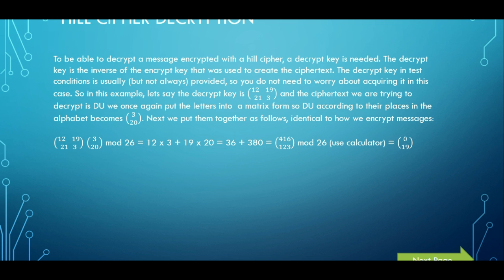So here we go, we have 12 times 3, 19 times 20. So 12 times 3 plus 19 times 20 is 36 plus 380 which equals 416. And then we have 21 times 3 as shown here, so 21 times the top of the 3 and 3 times the bottom of the 20. So 21 times 3 plus 3 times 20 is 63 plus 60 which is 123. We then mod 26 this, so 416 over 123 matrix mod 26, once again use the calculator and this will give you 0 and 0.